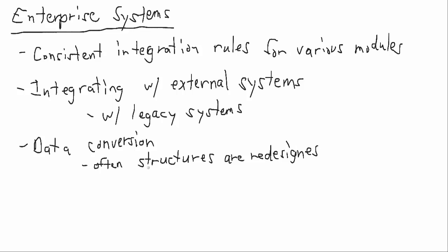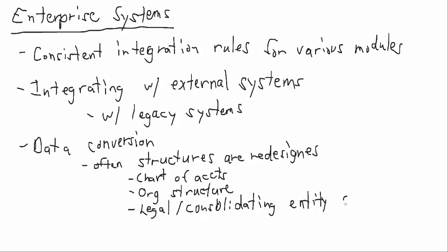So things as simple as the chart of accounts all the way to the org structure, the new system may make available new legal and consolidation structures, a new system for product identification, product grouping may be available. So lots of changes just from a data conversion standpoint.